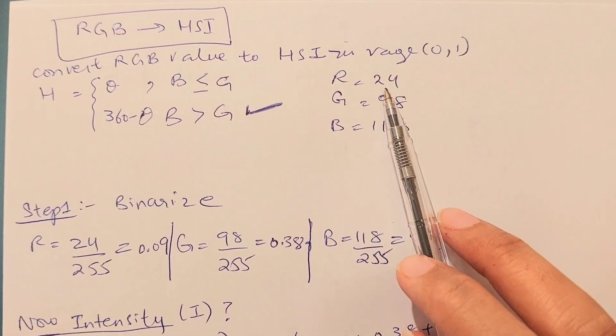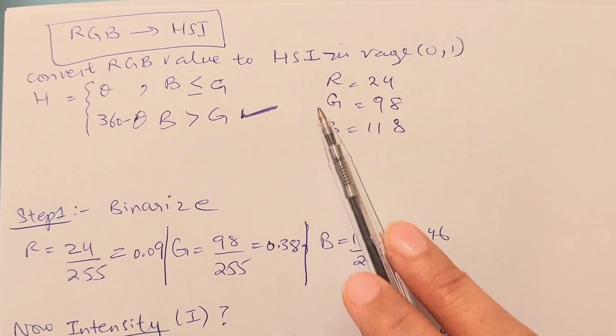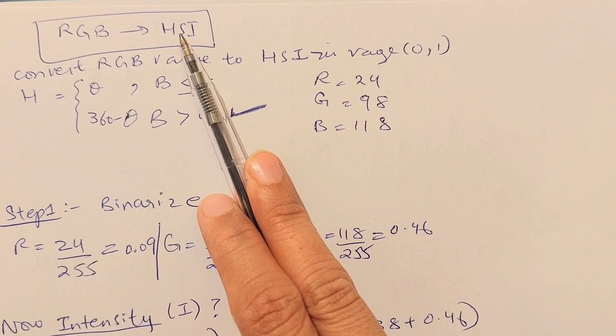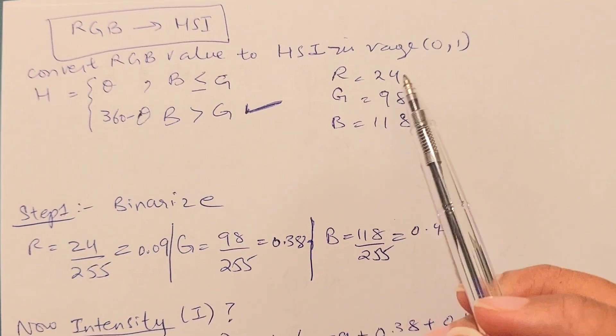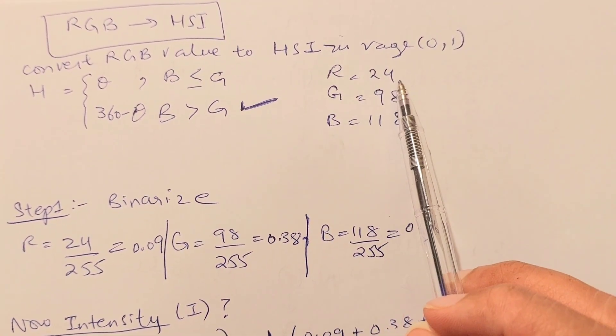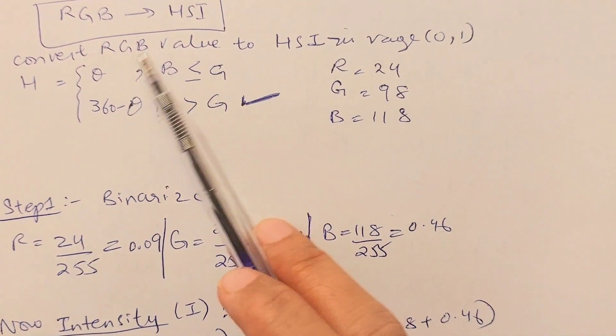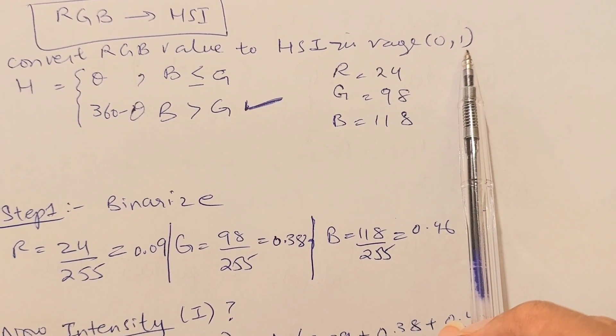As given in our example, we want to convert this type of data into an HSI model. H stands for hue, S stands for saturation, and I stands for intensity. If we are given this data - an image that has R value equal to 24, G value equal to 98, and B is 118 - we want to convert this RGB value into HSI in the range of 0 to 1.